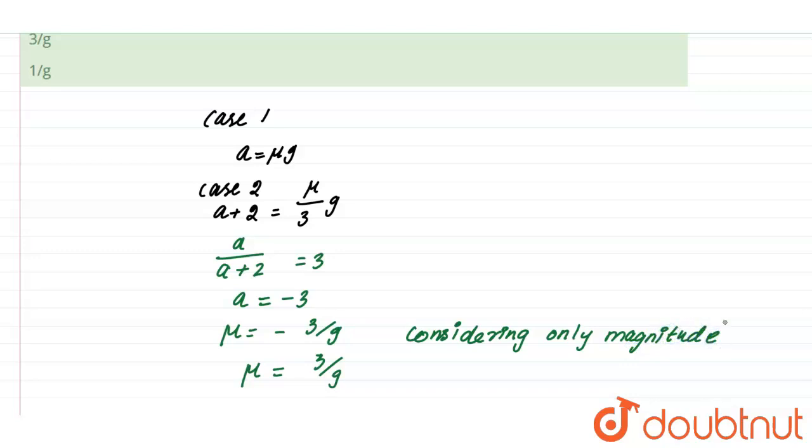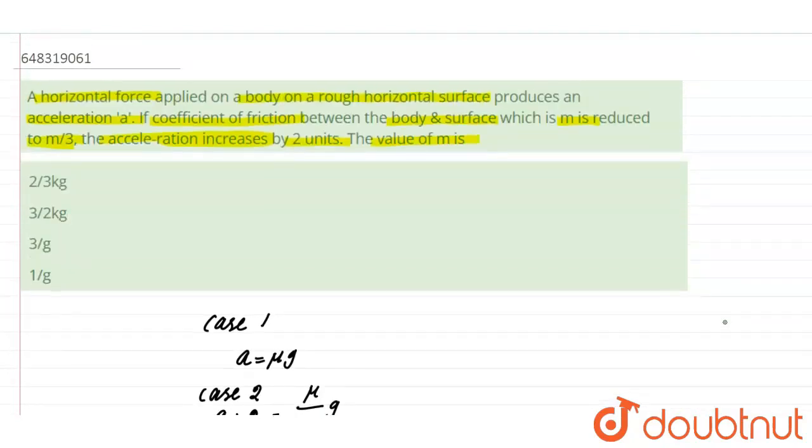So the right option is 3 by g. The value of m is 3 by g is the right option.